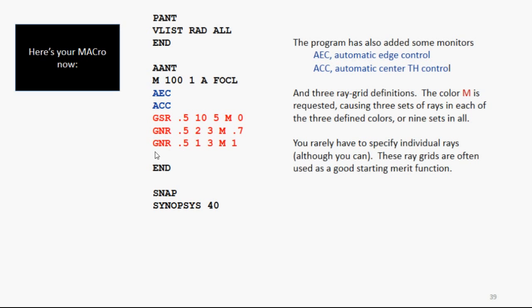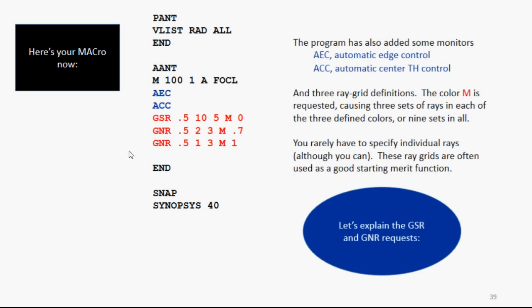Now you can add individual rays to the merit function if you want, but you don't usually have to, because these ray grids are usually a very good starting merit function.